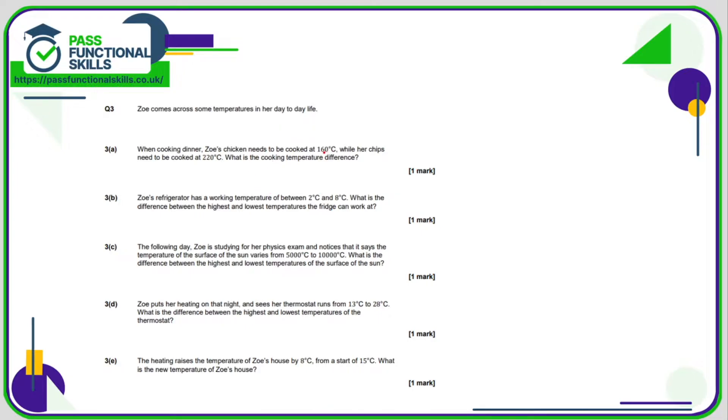Chicken needs to be cooked at 160 and chips 220. 220 minus 160, that is a difference of 60 degrees.